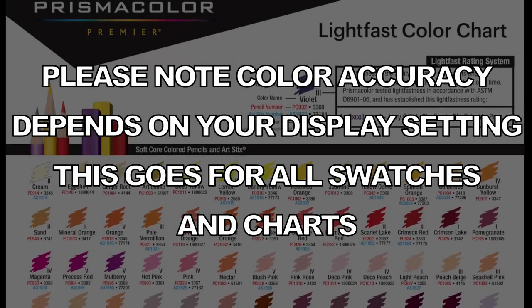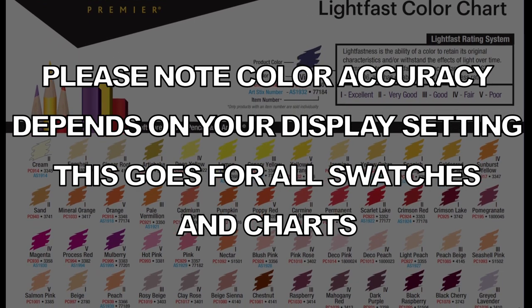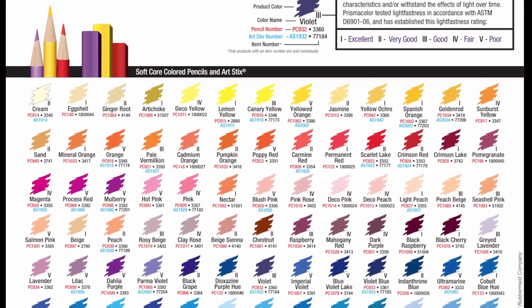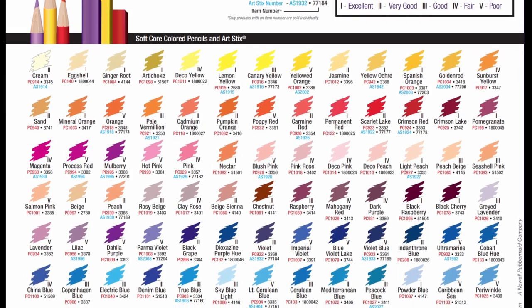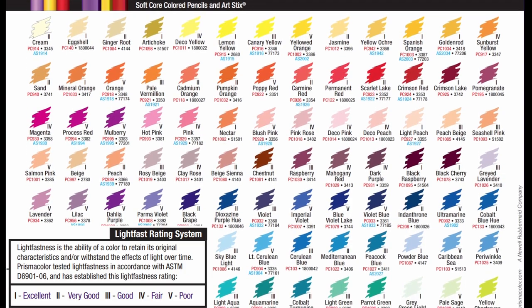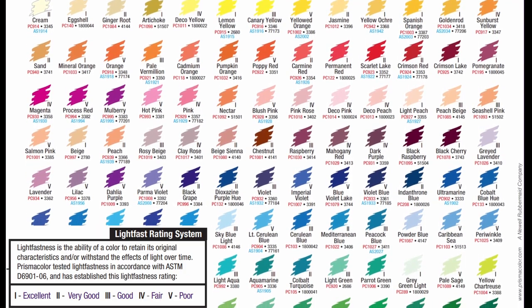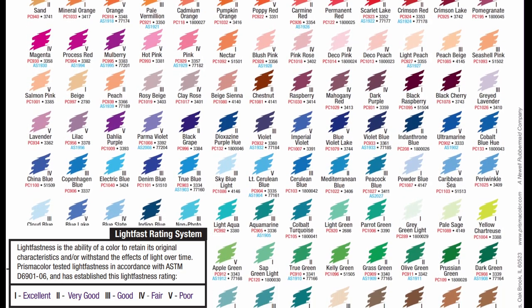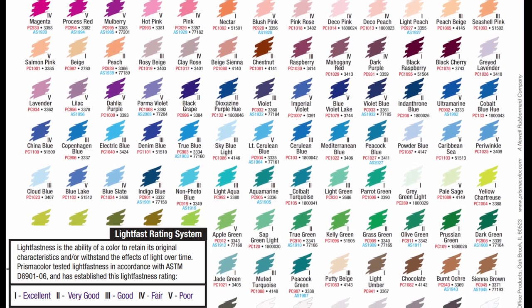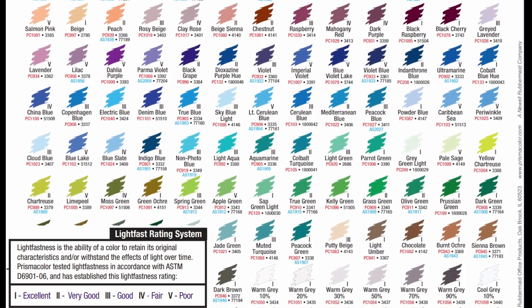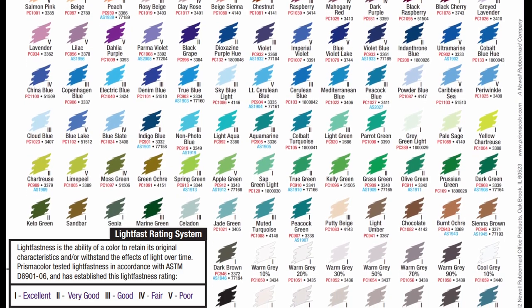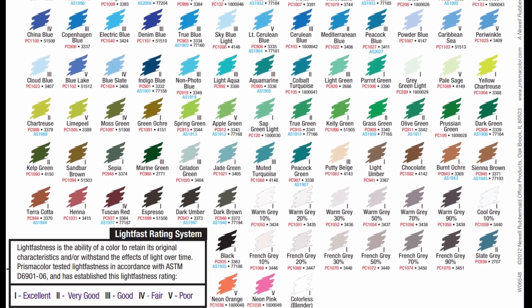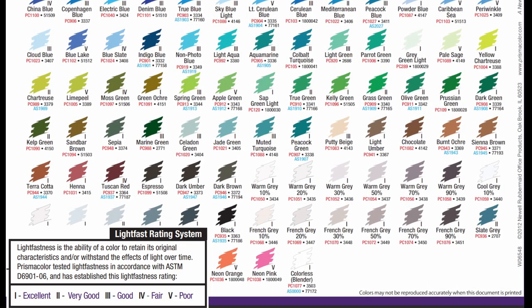Prismacolor Premier Colored Pencils come in 150 unique colors. This is the official color chart and is fairly accurate to what you can expect from the pencils. They are available in open stock from retailers like Blick at $1.36 per pencil. The sets range from various 12 count tins at $26.99 from Michaels or $14.59 from Blick up to a complete set of 150 for $200 at Michaels or $120 from Blick. It's a no brainer. Shop around.